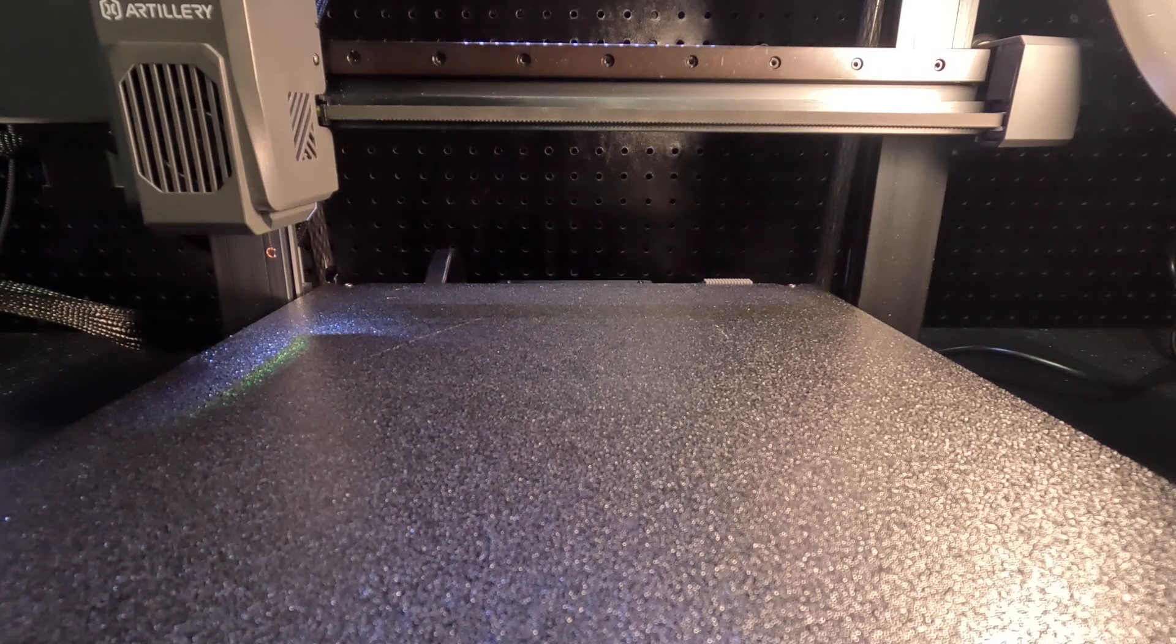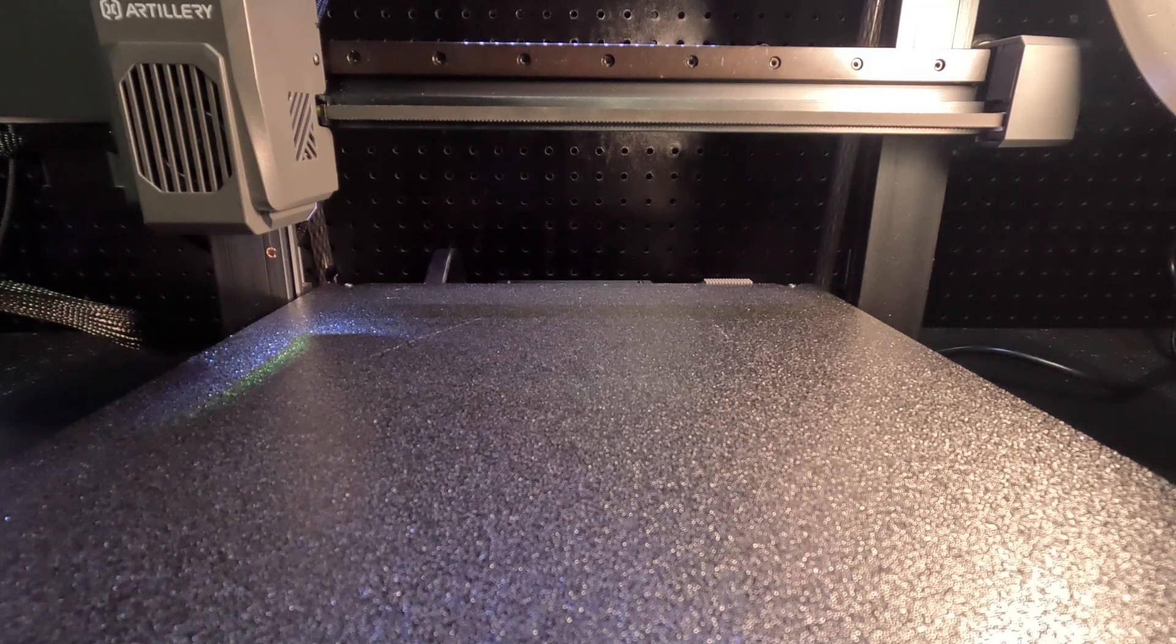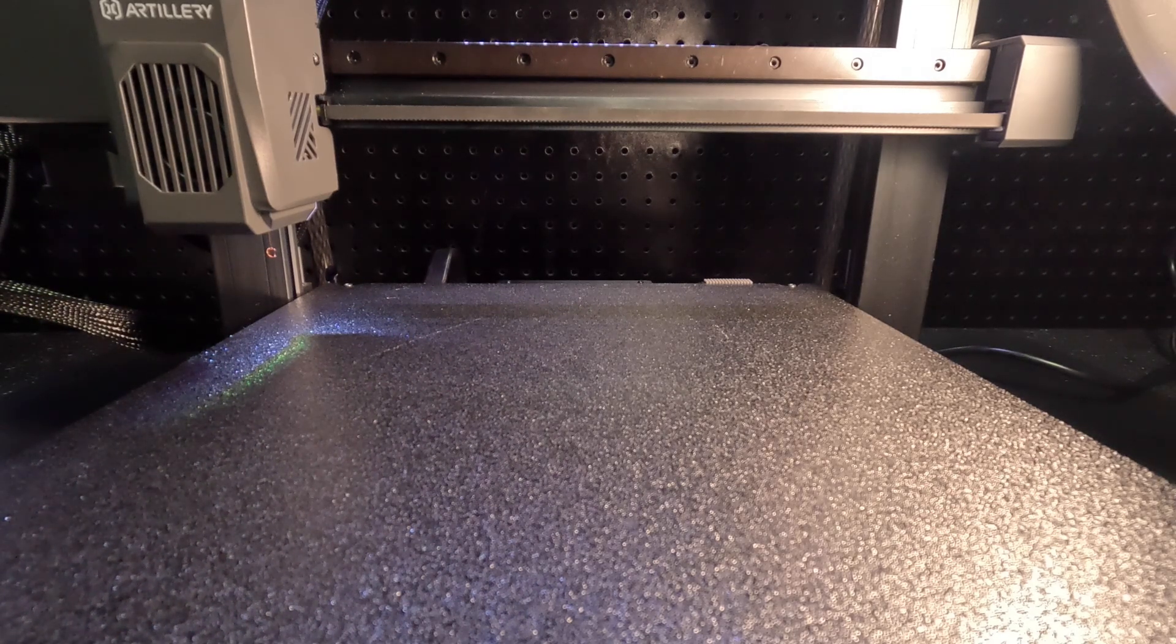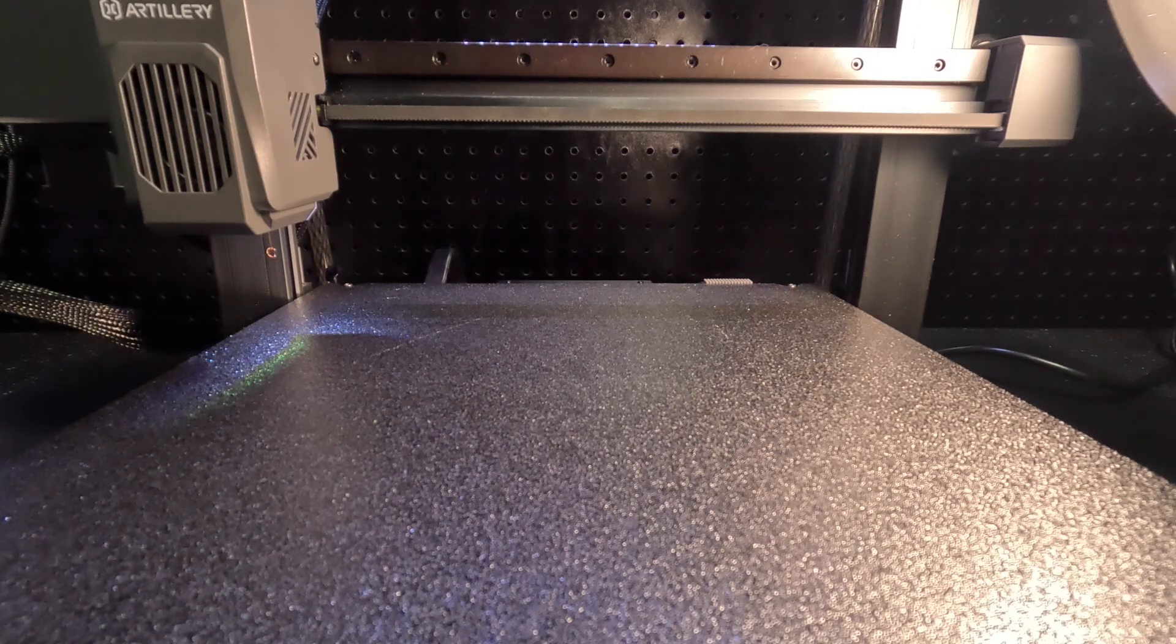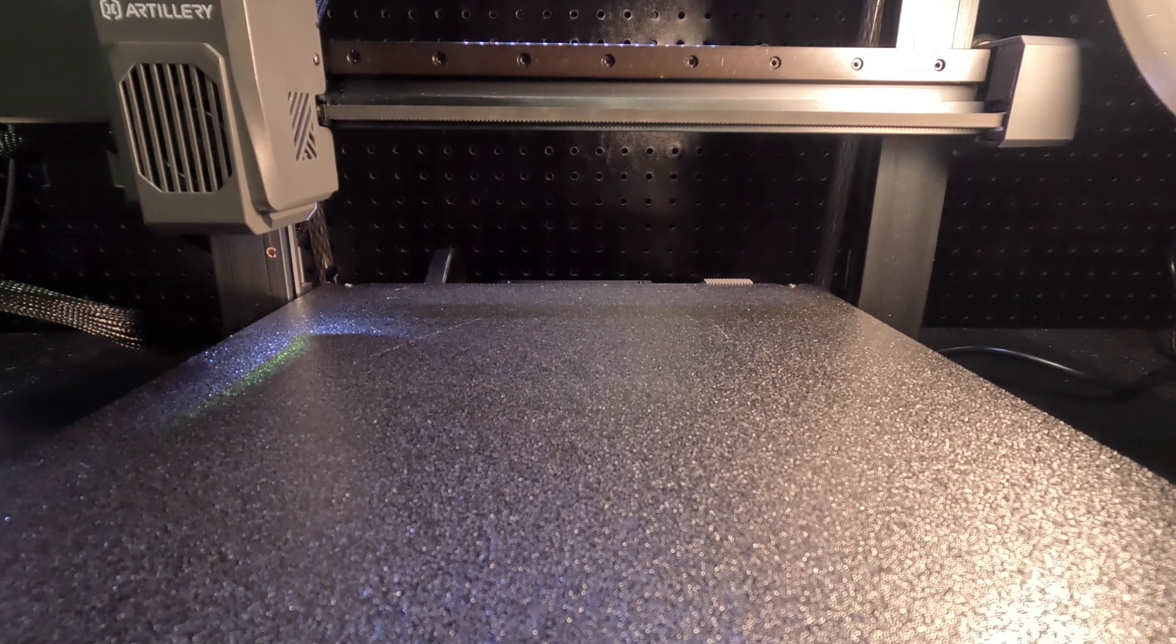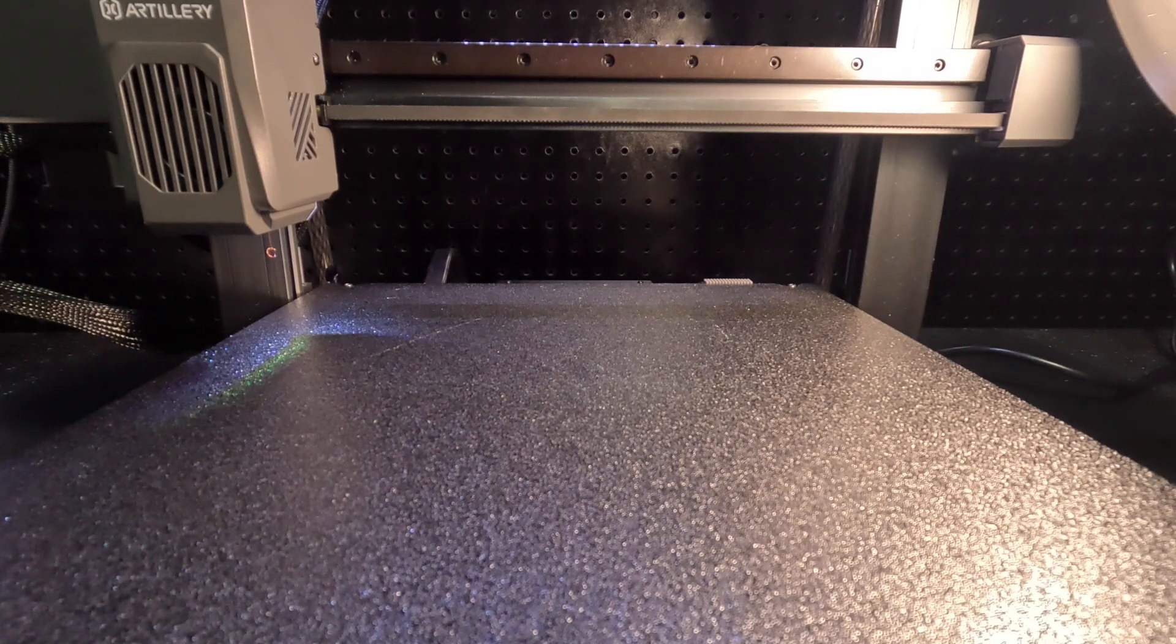First one actually did succeed on the Artillery Hornet, but when I went to print the second one, that's when my printer failed. So this is going to be with the Artillery Sidewinder X4 Plus S1. This is the larger format printer and I'm interested to see how this works.